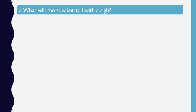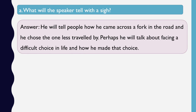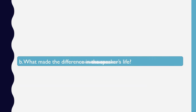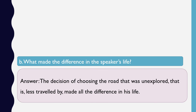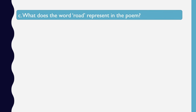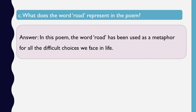Let's look at the answers now. What will the speaker tell with a sigh? He will tell people how he came across a fork in the road and chose the one less travelled by. Perhaps he will talk about facing a difficult choice in life and how he made that choice. What made the difference in the speaker's life? The decision of choosing the road that was unexplored — less travelled by — made all the difference in his life. What does the word 'road' represent in the poem? In this poem, the word 'road' has been used as a metaphor for all the difficult choices we face in life.